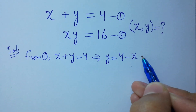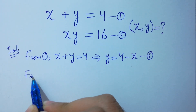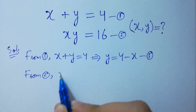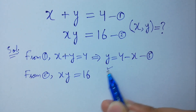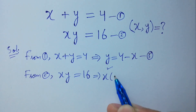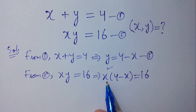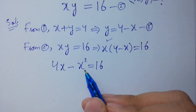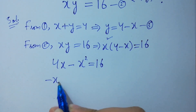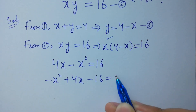Let this be the third equation. From the second equation, x y equal to 16. Since y equal to 4 minus x, we substitute here: x times (4 minus x) equal to 16. So we get 4x minus x squared equal to 16. Rearranging: minus x squared plus 4x minus 16 equal to 0.